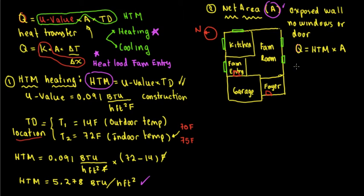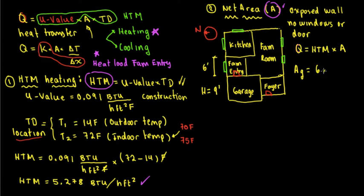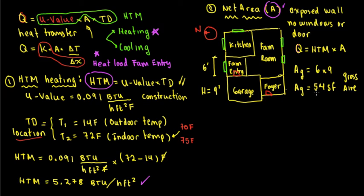The exposed area starts with the gross area. The exposed wall of the family entry is going to be 6 feet, and the ceiling height H is 9 feet. So the gross area is going to be 6 times 9, which equals 54 square feet. That is the gross area.